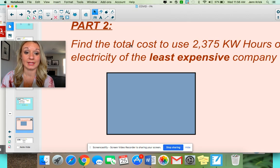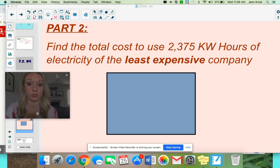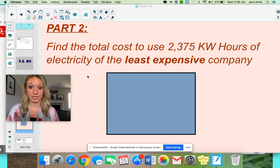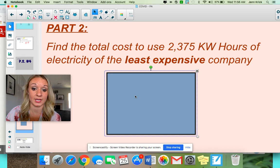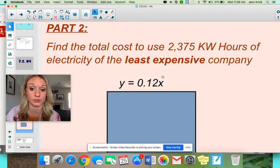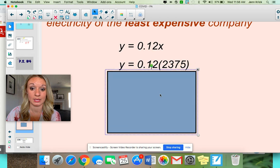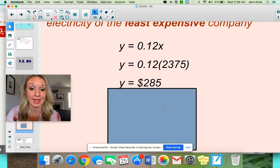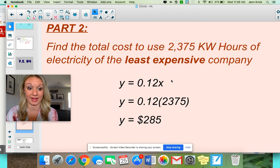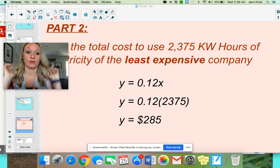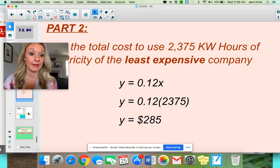Part two asks you to find the total cost if we used 2,375 kilowatt hours of electricity from the least expensive company. So least expensive means cheaper, so the one that was 12 cents. So if I was writing out just a very basic equation, it'd be Y equals 0.12 X because this is your unit rate. X represents the number of hours of electricity that we use. So plug in 2,375. And your total cost is going to be $285. So that was for question one. Take a look back at your work. Take a look back at the feedback just to help you out a little bit.